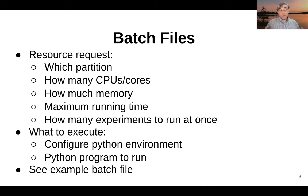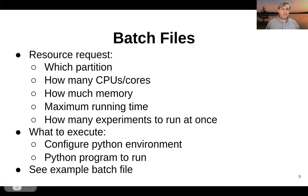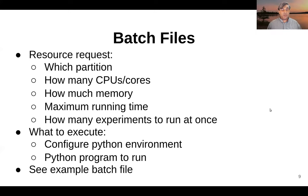Your experiments are all configured using what are called batch files. Batch files include several bits of information: a section that is all about requesting the resources you need, and then the batch file tells the compute node what to actually execute. Resources you might request include which partition you want, how many CPUs or cores you want to reserve, how much memory you want to reserve, your maximum running time, and in some cases it makes sense to queue up not just one experiment at once, but a whole set of them.